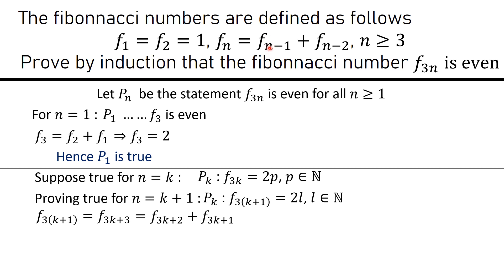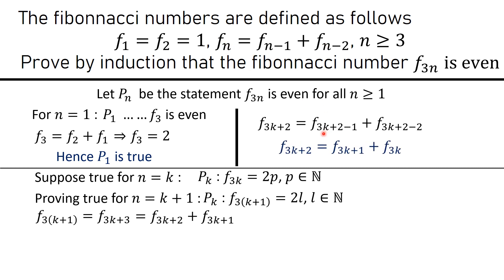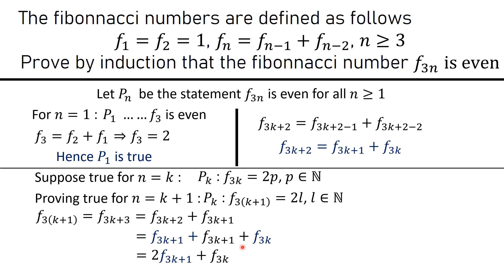Replacing n with 3k+3 in the recurrence, we get f(3k+3) = f(3k+2) + f(3k+1). Next, replacing n with 3k+2 gives f(3k+2) = f(3k+1) + f(3k). Substituting back: f(3k+3) = f(3k+1) + f(3k) + f(3k+1) = 2·f(3k+1) + f(3k).